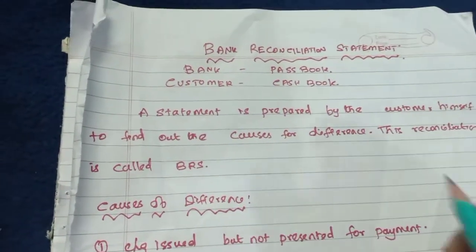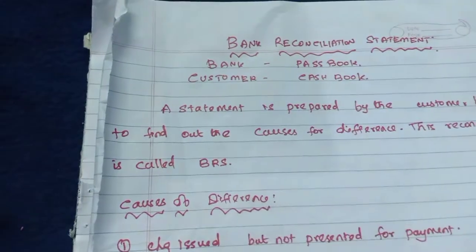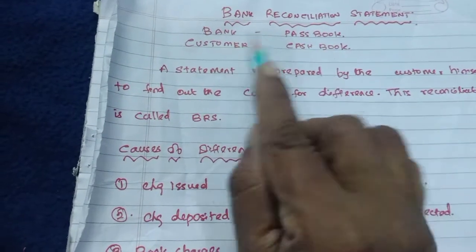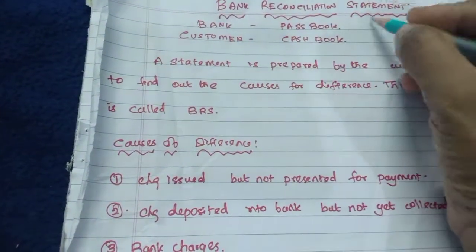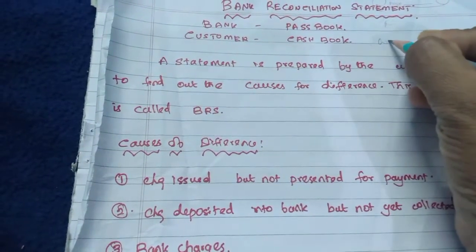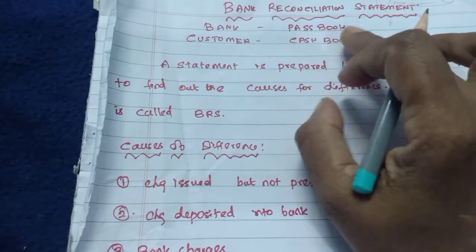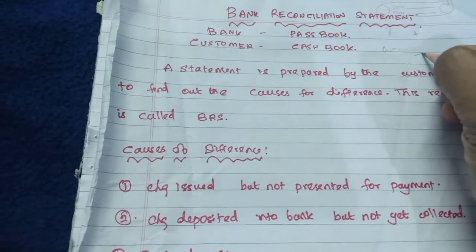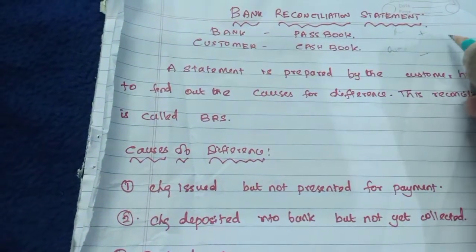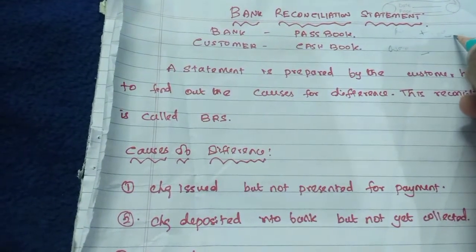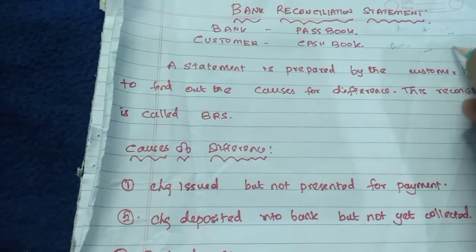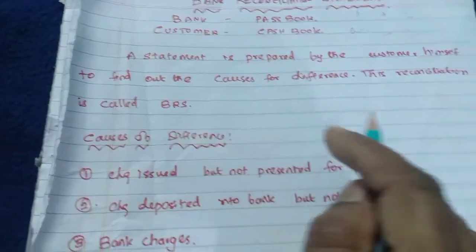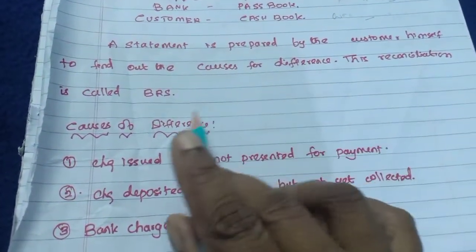Hello friends, welcome to Jemmecademy. I am going to discuss bank reconciliation statement and how to solve it. In the bank, we use a passbook, while the customer uses a cashbook. The cashbook is a contra entry of the passbook — if the passbook balance shows a credit balance, the cashbook balance will show a negative balance. If the passbook shows a negative balance (OD or loan account), the customer's cashbook will show a positive balance. This statement is prepared by the customer to find out the causes of differences, and it is called BRS.